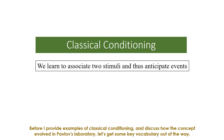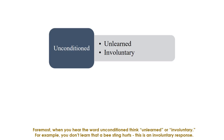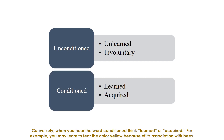Before providing examples of classical conditioning, let's get some key vocabulary out of the way. When you hear the word "unconditioned," think unlearned or involuntary. For example, you don't learn that a bee sting hurts — this is an involuntary response. Conversely, when you hear the word "conditioned," think learned or acquired. For example, you may learn to fear the color yellow because of its association with bees.